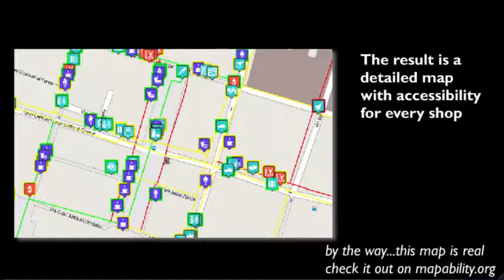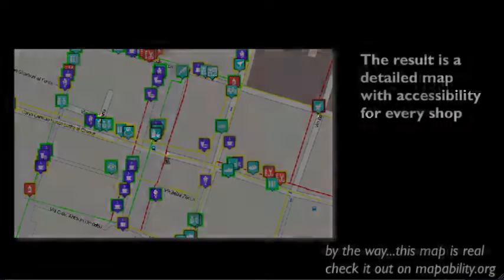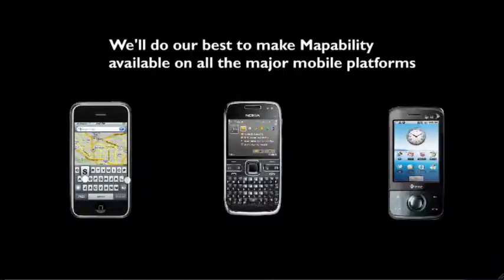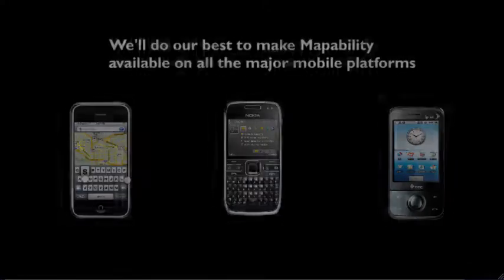By the way, the map you see here is real — check it out on mapability.org. Mapability will be available on major mobile platforms: iPhone, Android, and Symbian, if we have enough funding.